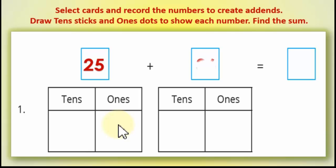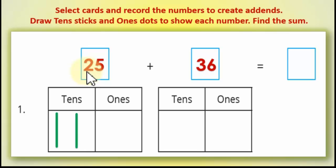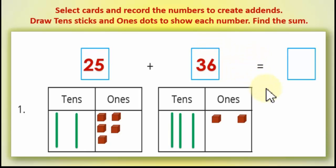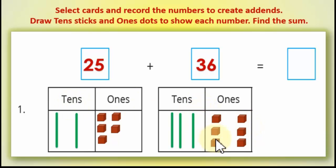25 plus 36. Here we have 2 in the tens place, and here we have 3 in the tens place. In 25 we have 5 in the ones place, and in 36 we have 6 in the ones place. هنا عندنا 5 في الـones وهنا عندنا 6 في الـones، هنضيفهم على بعض.